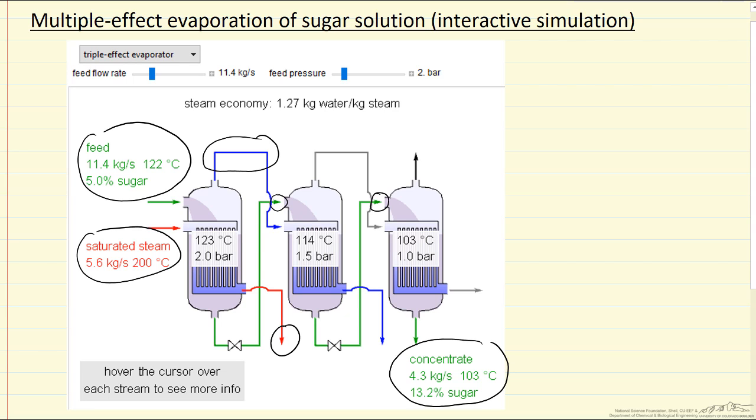The significant advantage is instead of using additional outside steam, we use the evaporated water in the second stage. For this to work with a temperature difference, we run the second effect at lower pressure and lower boiling temperature. The third stage follows the same pattern - steam from the second stage enters the third stage at lower pressure and temperature, maintaining a temperature difference for heat transfer.